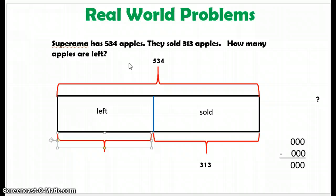Superama has 534 apples. Good. That's what I started with. They sold 313 apples. Good. Good. This is what they sold. This is what's going away. And now it's asking me how many apples are left.